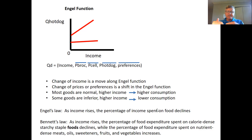The second is Bennett's Law — also an empirical finding. As income increases, the percent of food expenditures spent on calorie-dense starchy staple foods declines, while the percent spent on nutrient-dense foods like meats, oils, sweeteners, fruits, and vegetables increases. People shift income away from staple foods toward these higher-value, nutrient-dense foods — primarily fruits, vegetables, and livestock products.